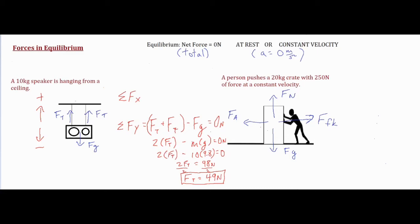Now on to our second problem, which is going to be a little bit more complicated. We are going to have the sum of forces in the x direction and the sum of forces in the y direction, and we do have some forces along both axes. For the sum of forces in the x direction, we are going to have FA minus FfK, and then equals zero — because we know our MA or our net force is going to be zero for anything that's in equilibrium.